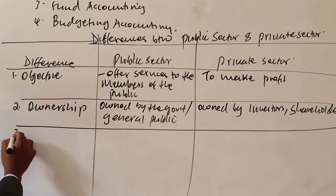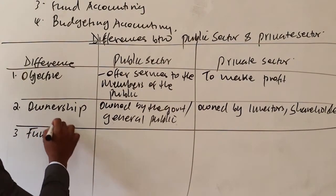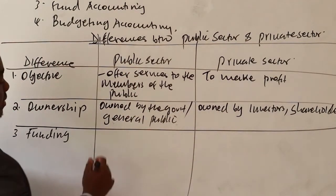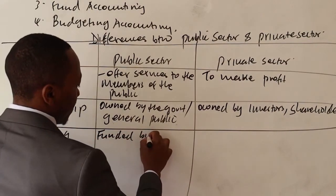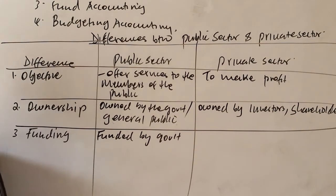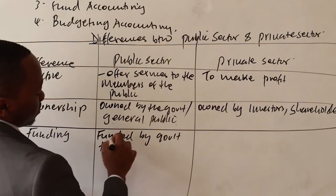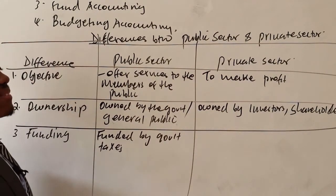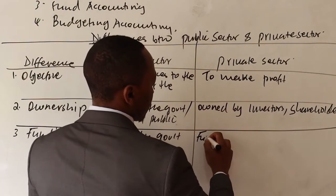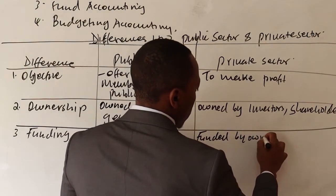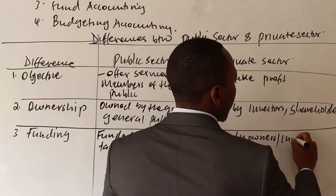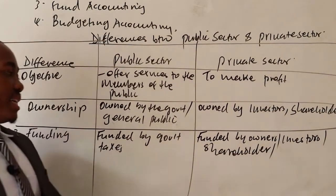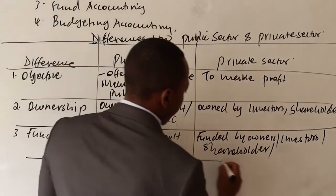Another difference is about funding. For the public sector, they are funded by the government, majorly through taxes. For the private sector, they are funded by the owners — the investors and shareholders.